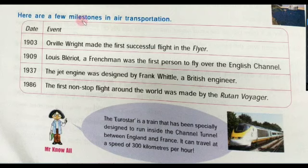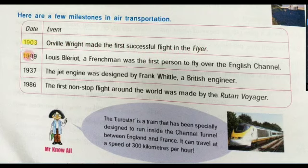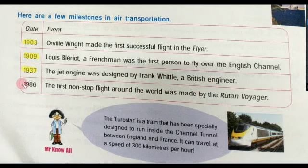In 1903, Orville Wright made the first successful flight in the Flyer. In 1909, Louis Blériot, a Frenchman, was the first person to fly over the English Channel. In 1937, the jet engine was designed by Frank Whittle, a British engineer. In 1986, the first non-stop flight around the world was made by the Rutan Voyager.